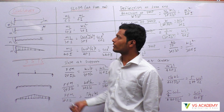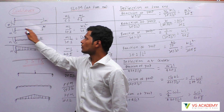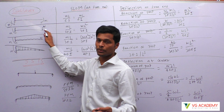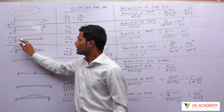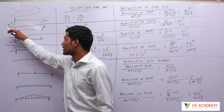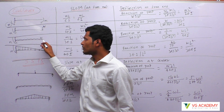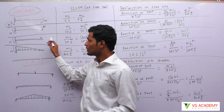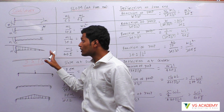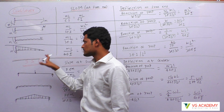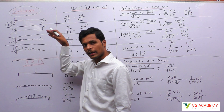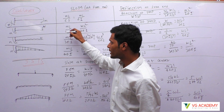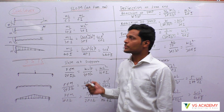You can feel intuitively that if all the load is concentrated at the end, you will have more slope. If the load is distributed, you will have slightly lesser slope because more load goes toward that side. So you can see the slope reduces by dividing by 2, by 3, by 4.